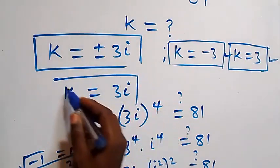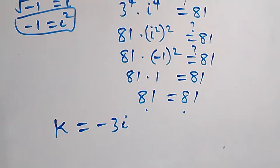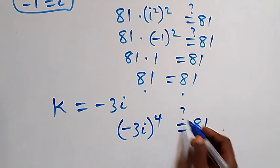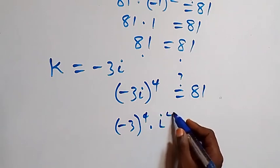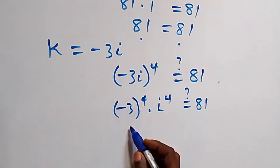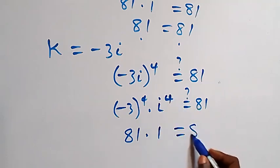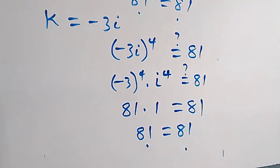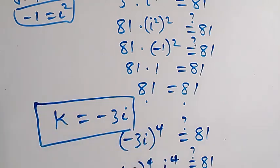Similarly, k equals minus 3i satisfies the problem. We have (minus 3i) raised to power 4 equals (minus 3) raised to power 4 times i raised to power 4. That is 81 times 1 equals 81, so left hand side equals right hand side. Hence k equals minus 3i also satisfies the problem.